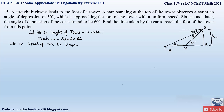The distance CD is equal to speed v multiplied by time 6 seconds, so CD = 6v. Similarly, the distance DA — the time we don't know and need to find — let us take it as T seconds. So the distance traveled from point D to A will be vT. We have to find the value of T.